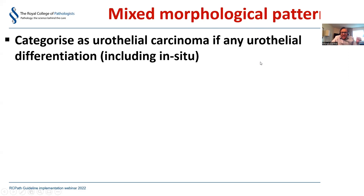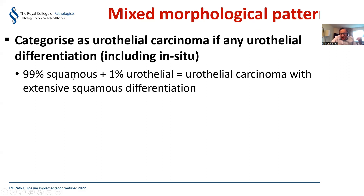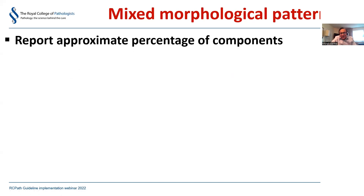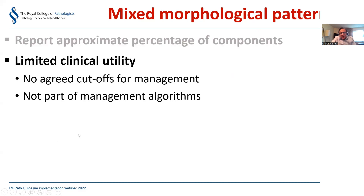When you get mixed morphological patterns, if there is any urothelial differentiation - even one percent urothelial with 99% squamous - it should be categorized as urothelial carcinoma with extensive squamous differentiation. The only exception is the small cell component: any small cell present, even one percent in a 99% urothelial cancer, means it should be categorized as small cell carcinoma. Report the approximate percentage of components, but note there are no agreed cutoffs for management - clinicians want to know whether it's predominantly one type or another, so a rough estimate to the nearest ten percent is sufficient.